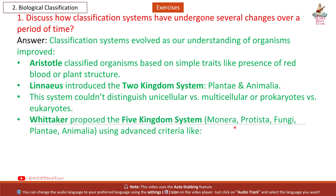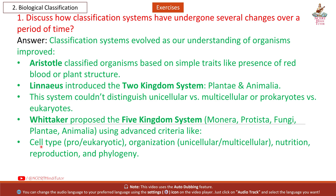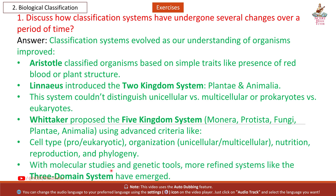Whittaker proposed the five-kingdom system — Monera, Protista, Fungi, Plantae, Animalia — using advanced criteria like cell type, prokaryotic/eukaryotic organization, unicellular/multicellular nature, nutrition, and reproduction. With molecular studies and genetic tools, more refined systems like the three-domain system have emerged.